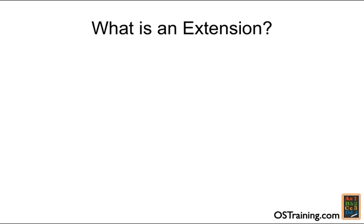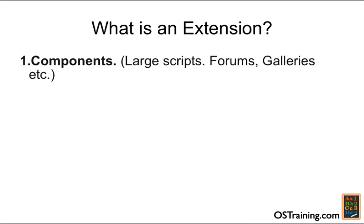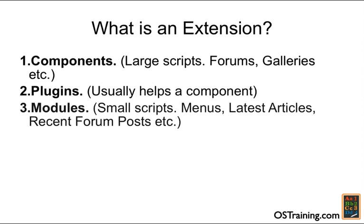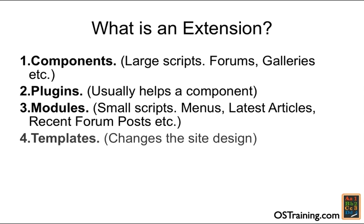In this session we're going to talk about extensions in Joomla. What is an extension? It's an add-on for Joomla, such as a component, which is a large script that gives us things like forums and galleries; plug-ins that help components using curly brackets; modules, or small scripts that give us menus, latest articles, etc.; templates, which change the site design; and languages, which give us the ability for multiple languages on a site.